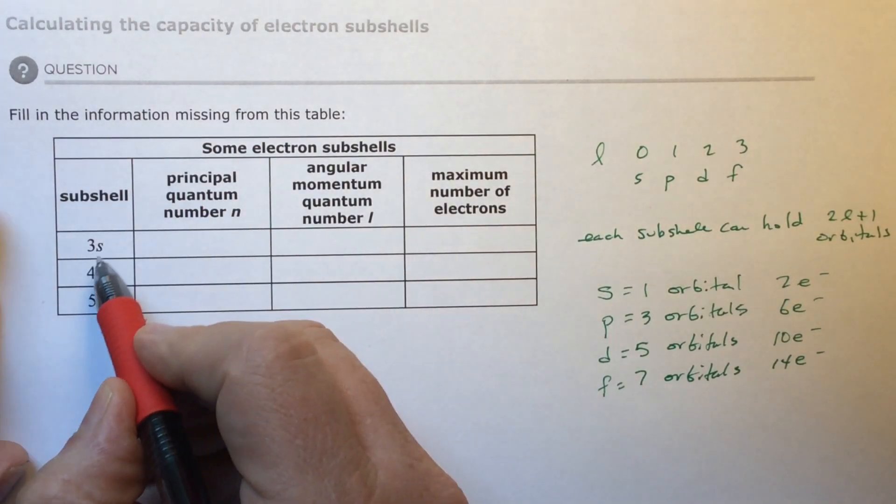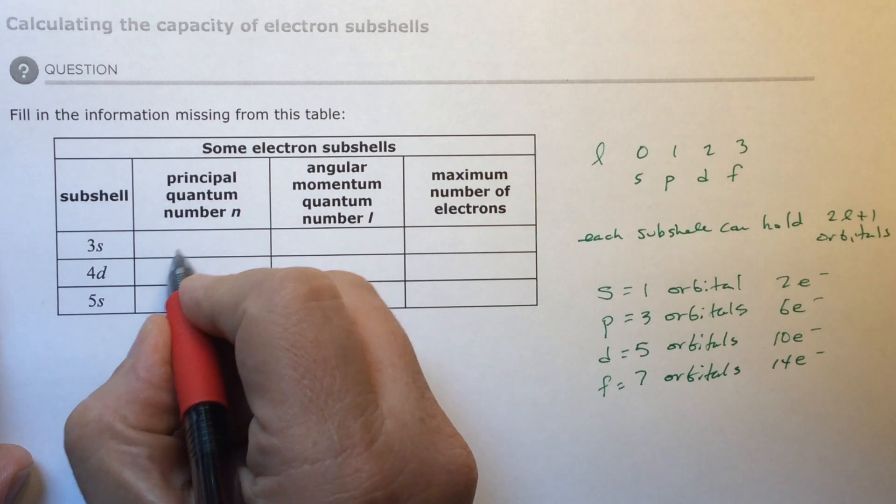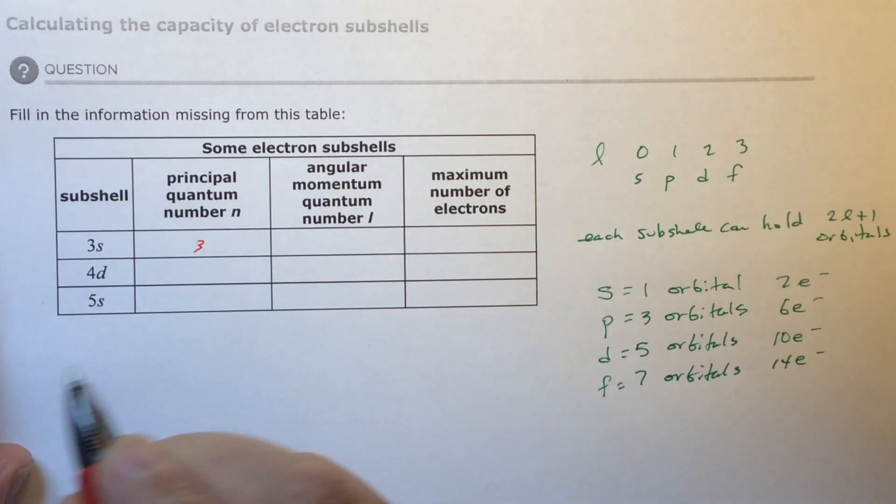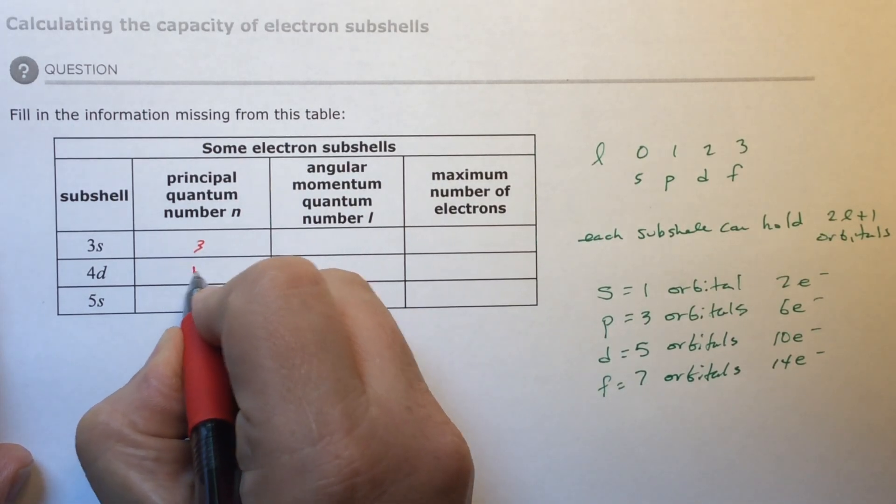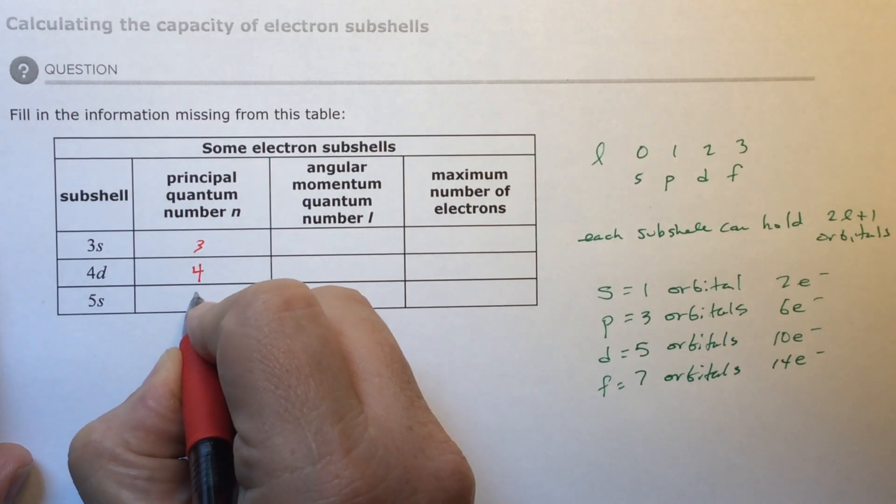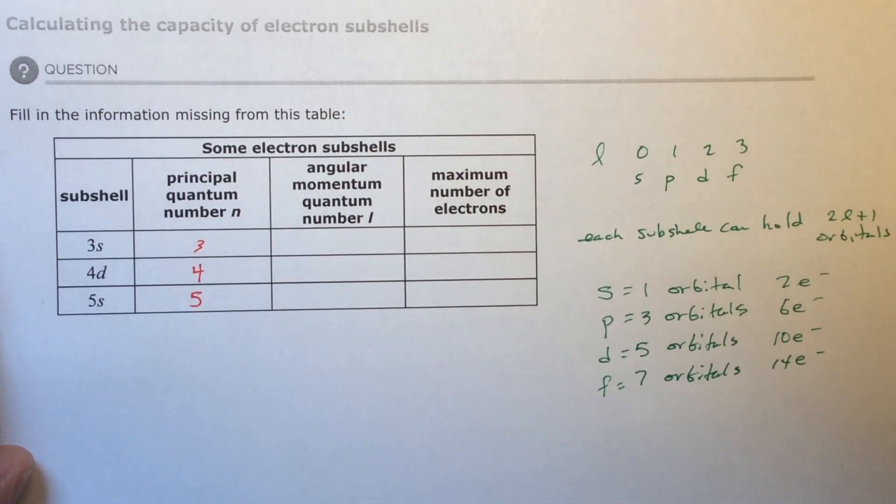Principal quantum number, that's easy. If it's three S, the principal number is three. It's that third period. Four D would be four. Five S would be five. So those are your simple ones.